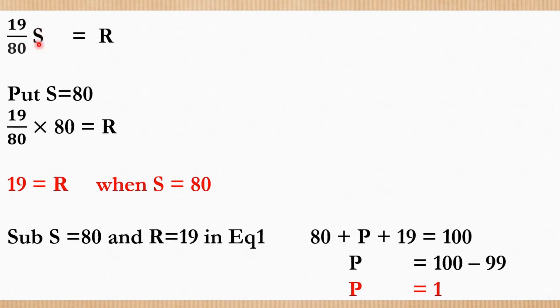Put S value as the same divisor 80 or the multiples of 80 so that it gets cancelled and we can find R. Let's put S equal to 80. So 80 and 80 get cancelled and R is 19. When S is 80, R is 19.